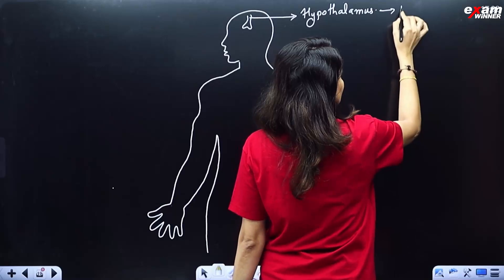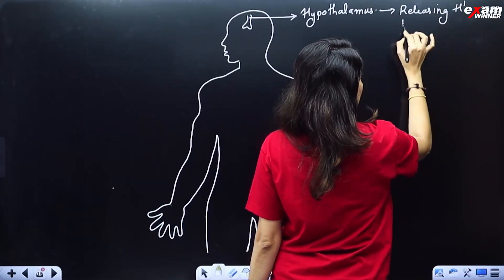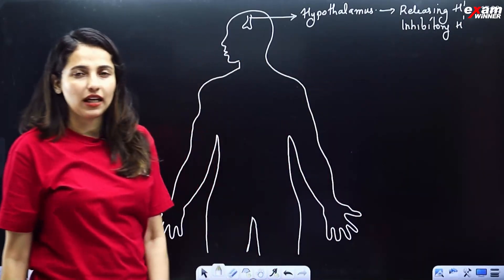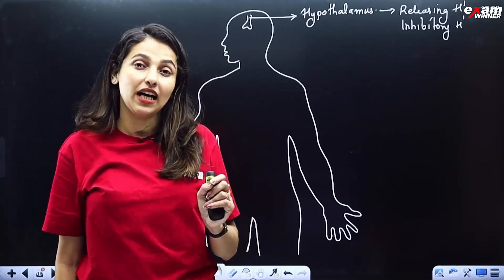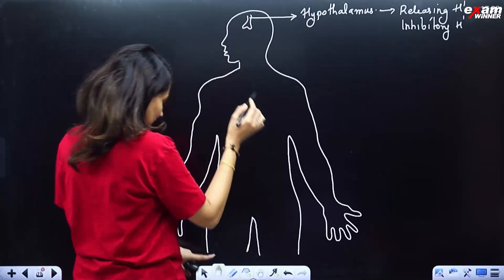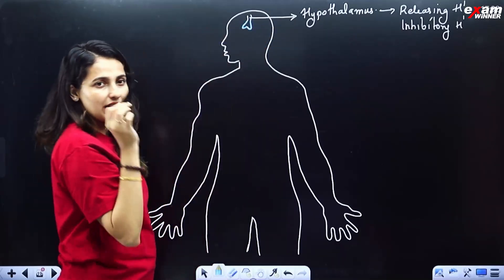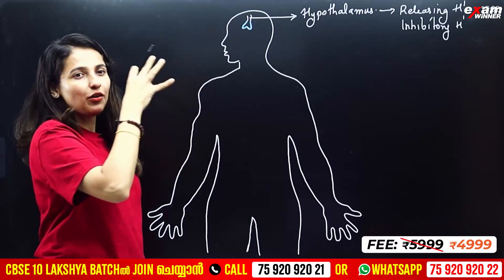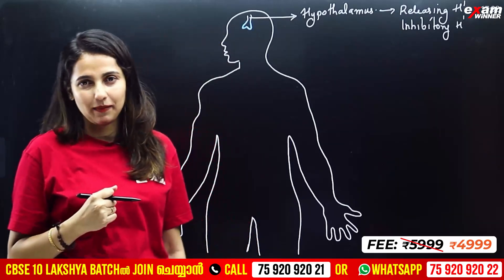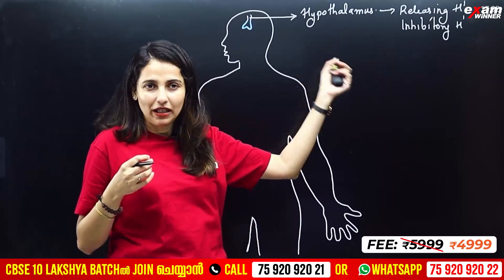Hypothalamus is a gland. It produces releasing hormones and inhibitory hormones. The main function of hypothalamus is to give instructions to the pituitary gland. The pituitary gland has two lobes: the anterior lobe and the posterior lobe.